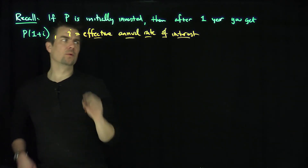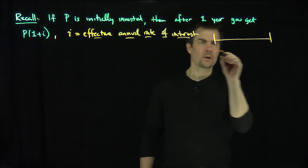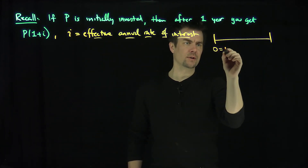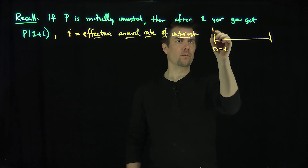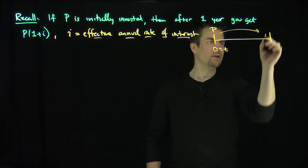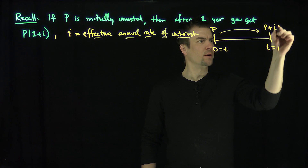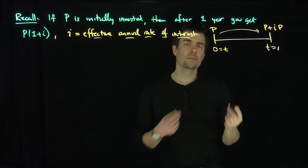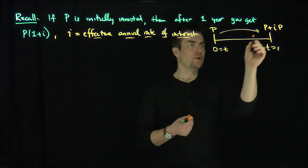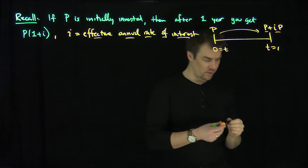In this model, you start at time zero with P, and then at time t equals 1 you receive your P back plus IP — so you get your initial principal and then your interest.